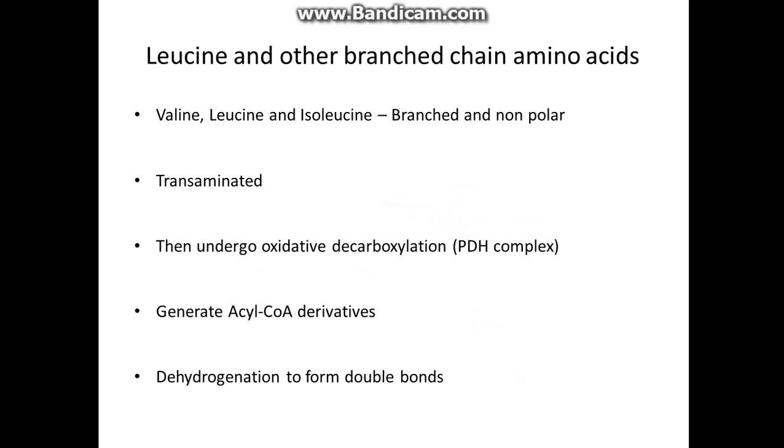I should discuss them as one, but leucine and the other branched-chain amino acids share very similar catabolisms. Basically, the process goes this way. Any branched-chain is branched and non-polar, it transaminated, then undergoes oxidative decarboxylation by the PDH complex, and generates acetyl-CoA derivatives. Dehydrogenation then occurs to form double bonds.